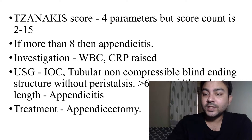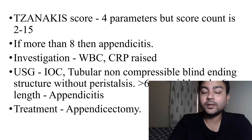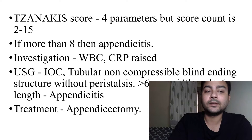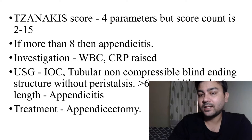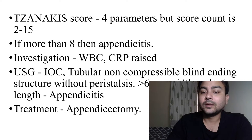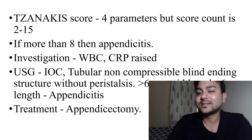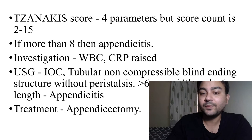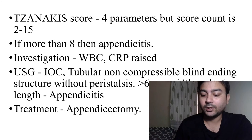Investigations for appendicitis: CRP is raised, WBC is raised. Ultrasound is the investigation of choice in acute appendicitis. Positive ultrasound findings: tubular, non-compressible, non-peristaltic, blind-ending structure. Width of appendix more than 6 mm and length more than 6 cm are the important criteria. Treatment is appendicectomy.